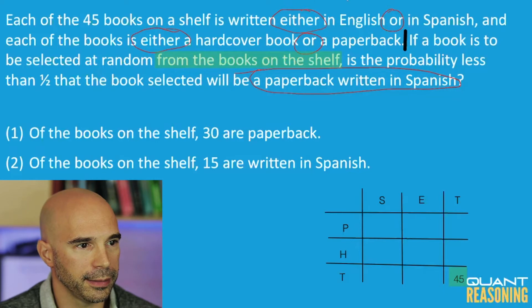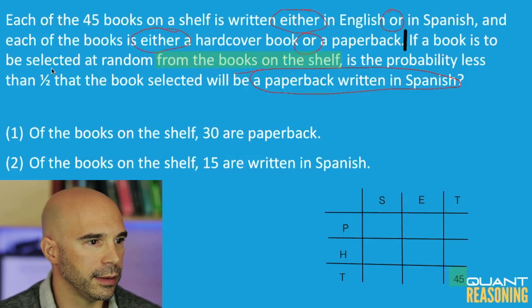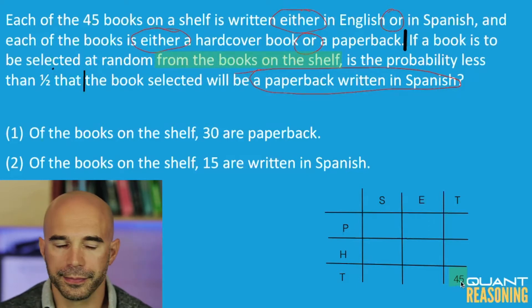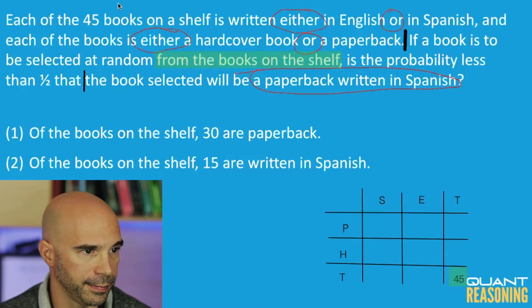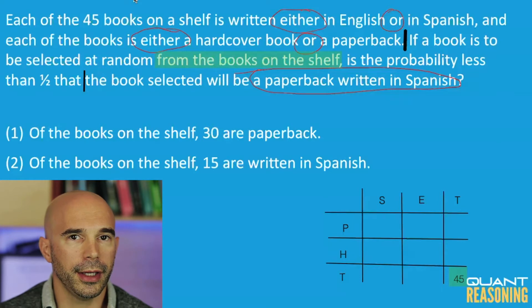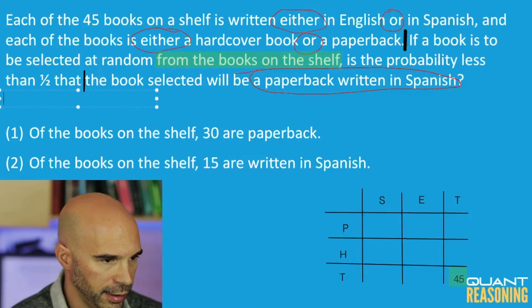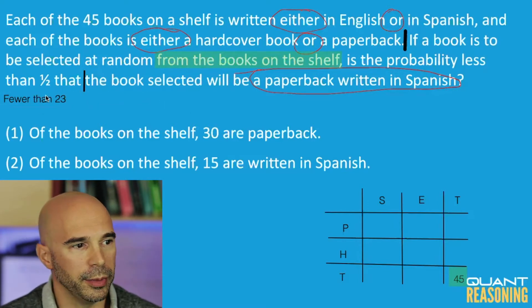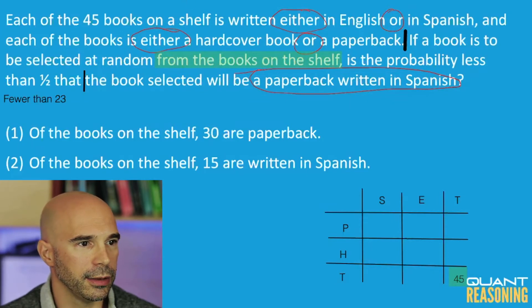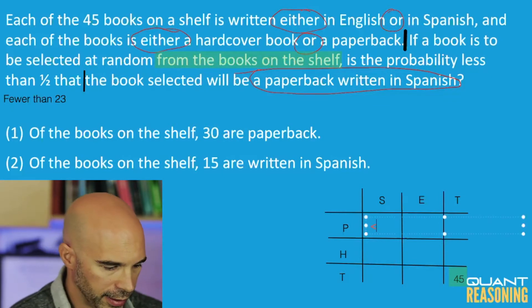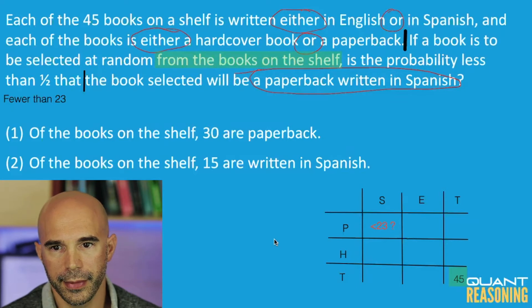Let's pause after the word 'that' and ask ourselves: what kind of numbers would have a probability of less than half? Out of 45, what's the cutoff — the maximum number of books that would still give you less than half? 22 is the cutoff. Because if you go to 23, that's already more than half. But 22 is the last one that's still less than half. So I'll rephrase: fewer than 23. Anything fewer than 23 would be less than half of 45. So is it true that fewer than 23 of the books are paperback in Spanish? We are wondering whether or not this number is less than 23.